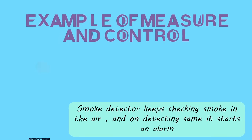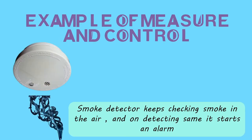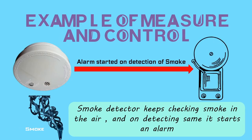Like in our fire alarm system, the smoke detector is continuously measuring the smoke around itself. Once the smoke level measured reaches its set threshold value, it starts an alarm. So here we see the instrument measured a value, and then on the basis of that measured value an alarm was set on — so control is also there.